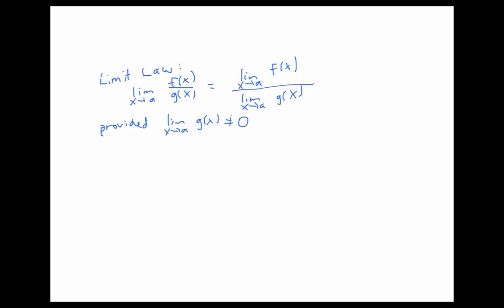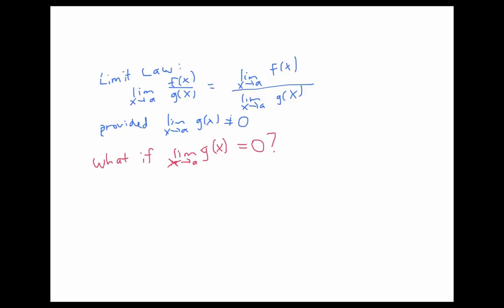The limit law about quotients tells us that the limit of the quotient is the quotient of the limits, provided that the limits of the component functions actually exist, and that the limit of the function on the denominator is not equal to zero. But what happens if the limit of the function on the denominator is equal to zero? This video will begin to answer that question.